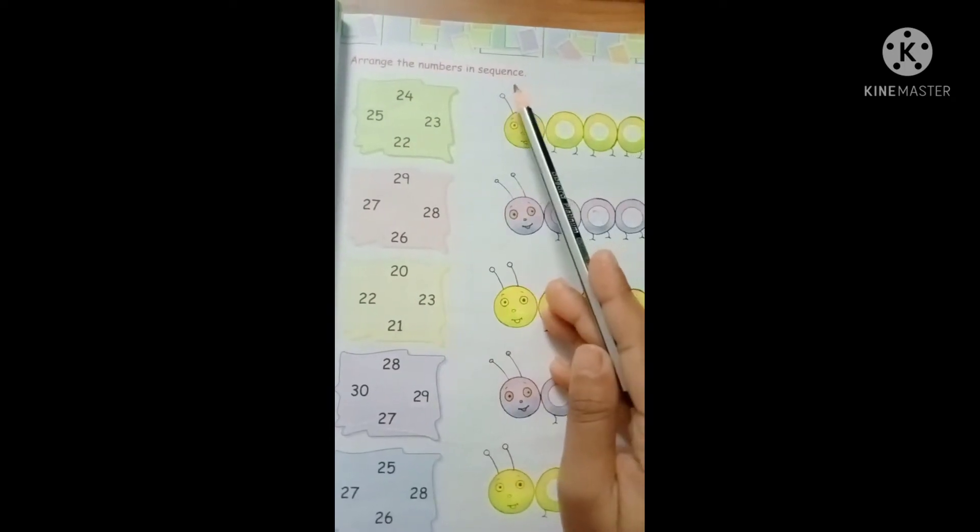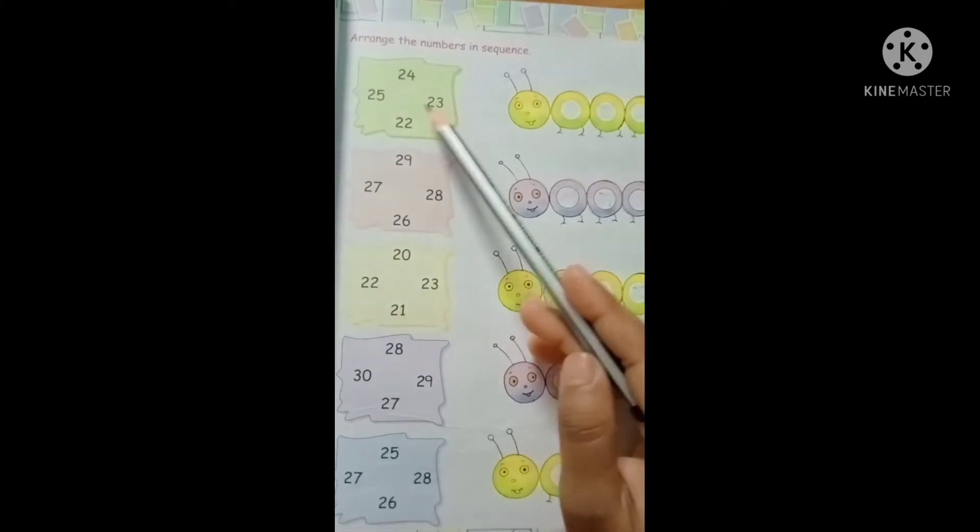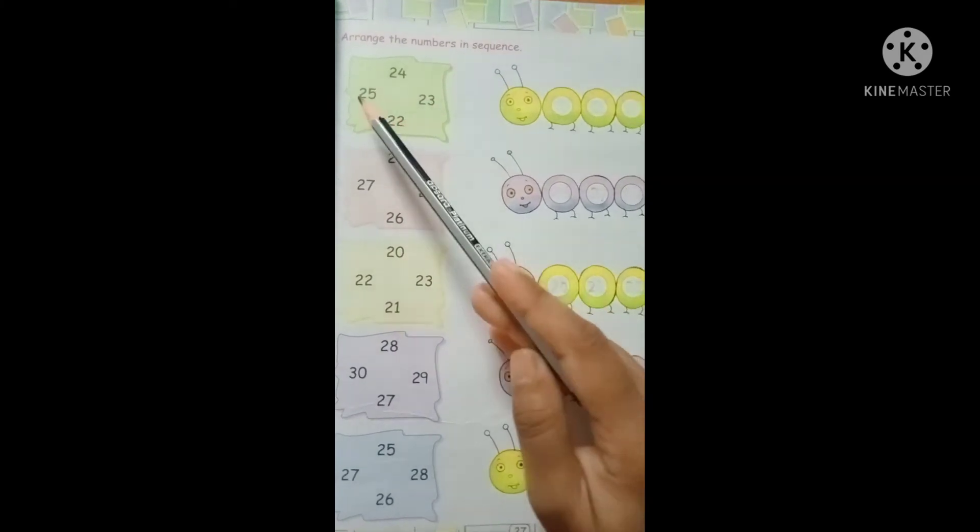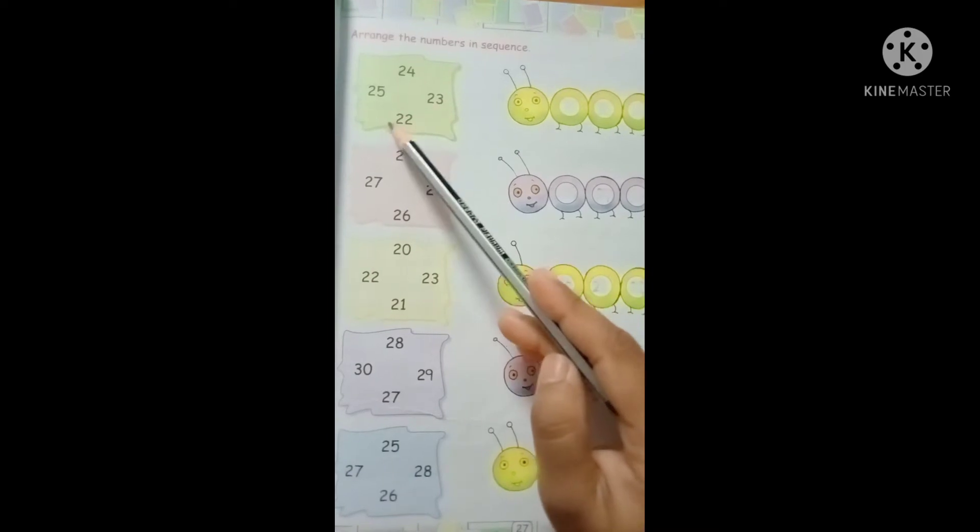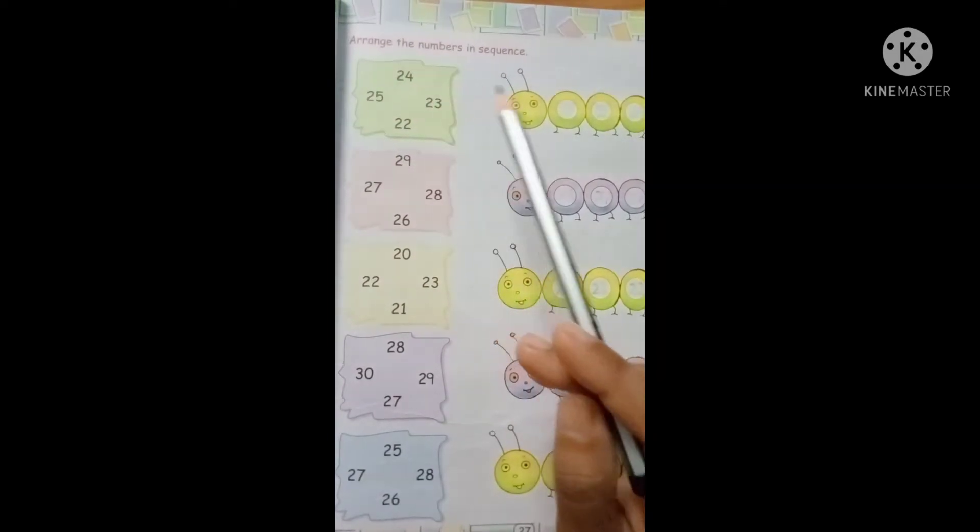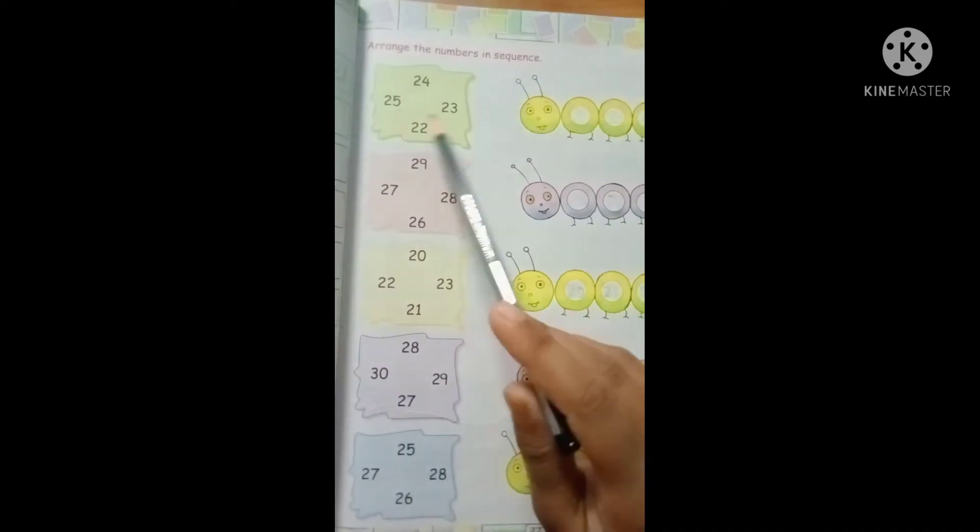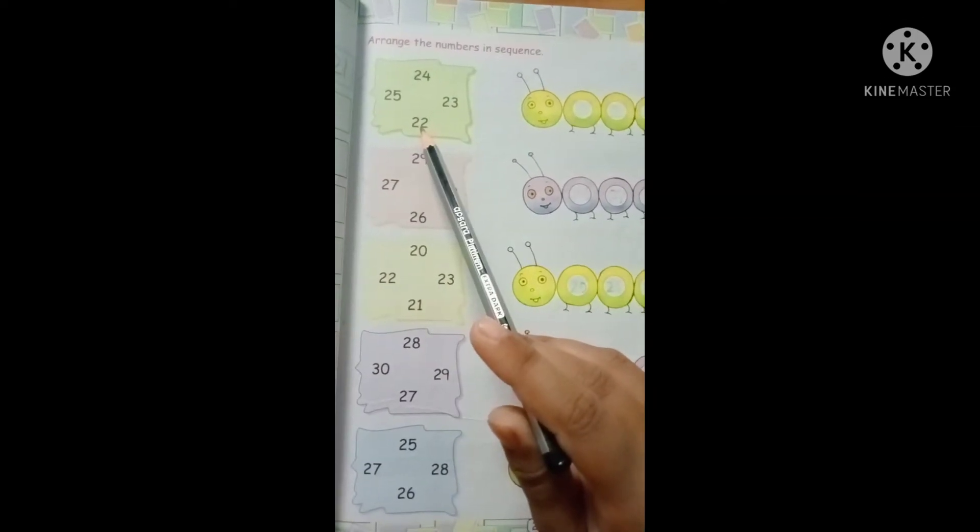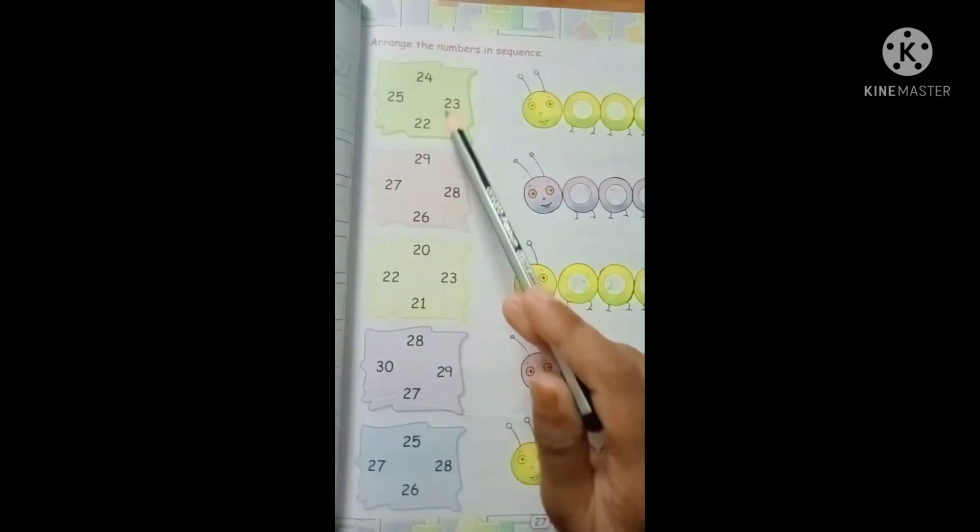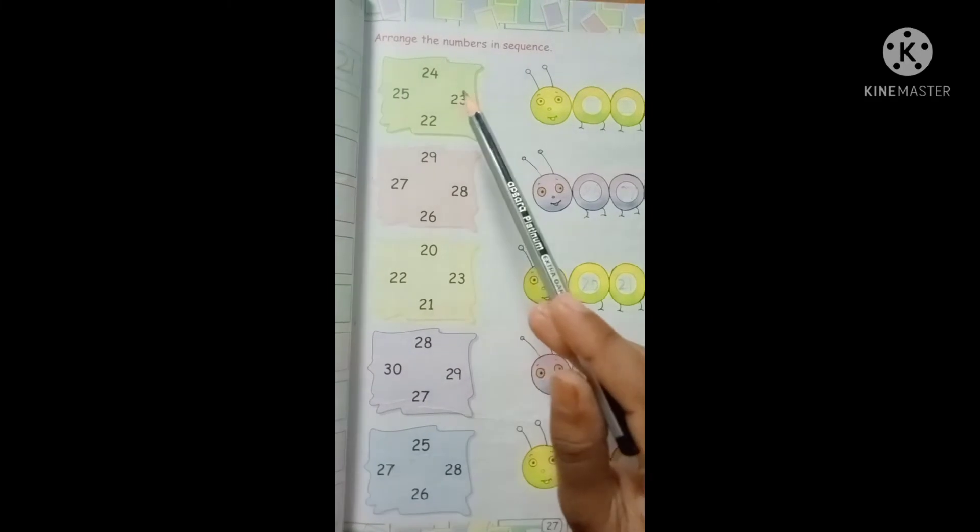In this book there are four numbers: 24, 25, 23, 22. These four numbers are mixing so you find out first which number goes first. First of all you see the number 25, 24, 23, 22. So which is the first number? 22.